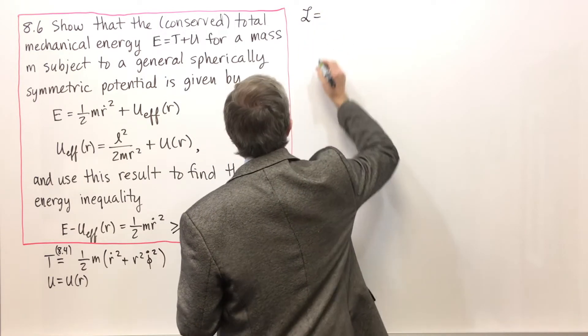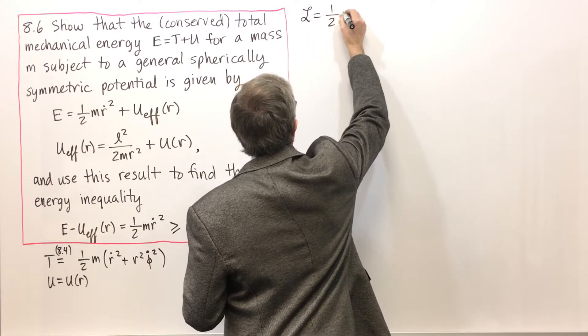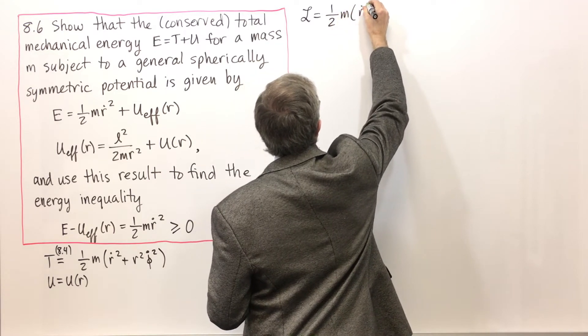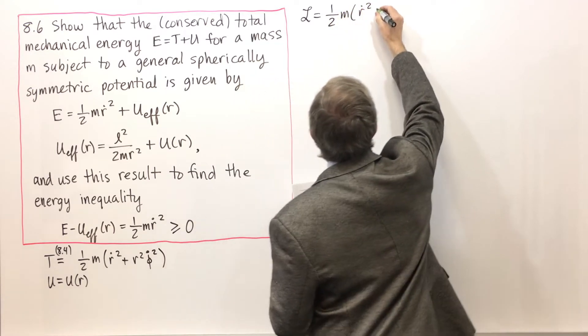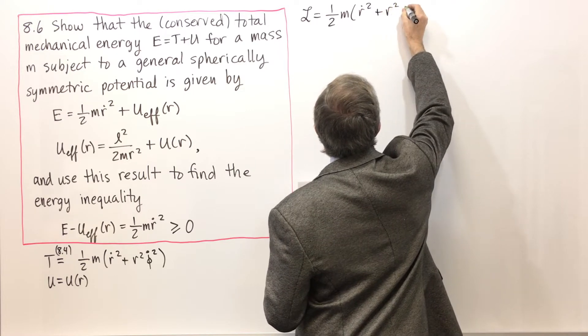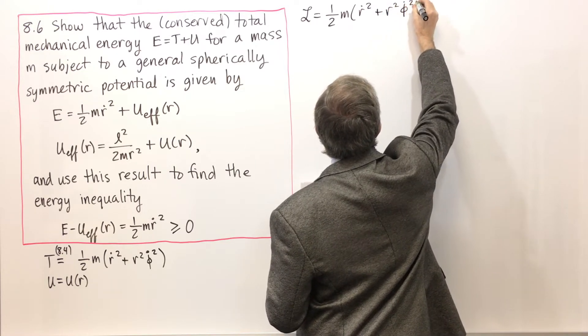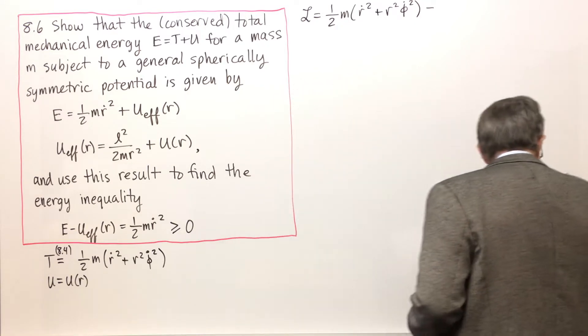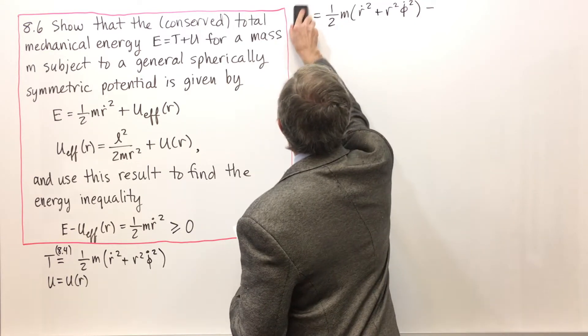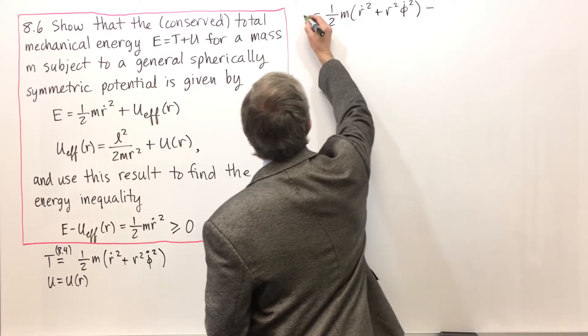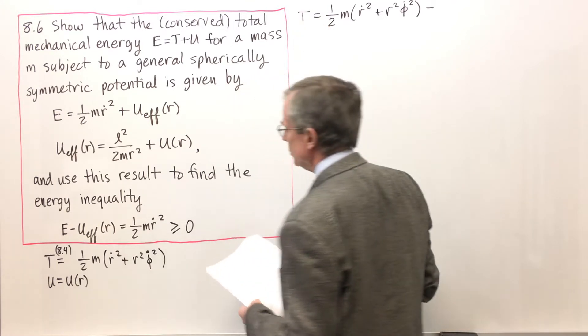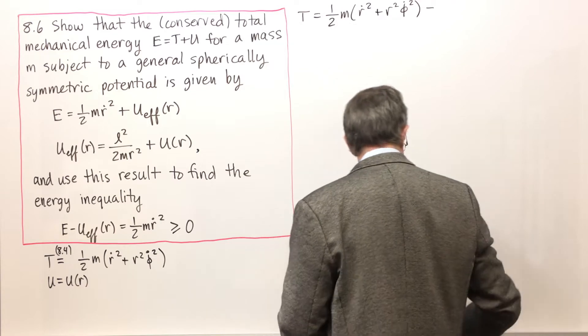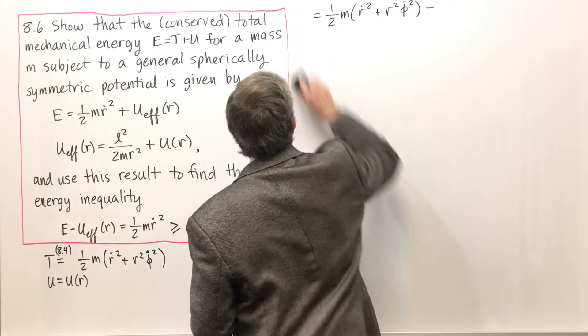Well, L, what does that turn out to be? It's T minus U. That's one-half m, r dot squared plus r squared phi dot squared. I'm sorry, we're looking for E, not L. And E is T plus V, or T plus U.